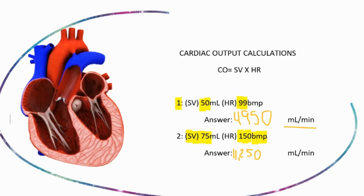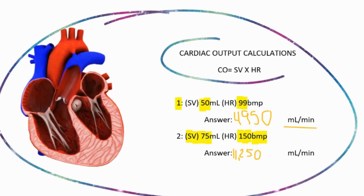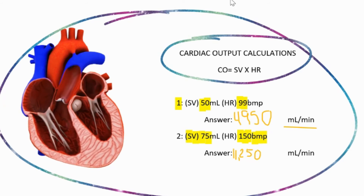So there you have it — that is your cardiac output calculation. It is fairly simple to determine when you have the stroke volume and the heart rate.